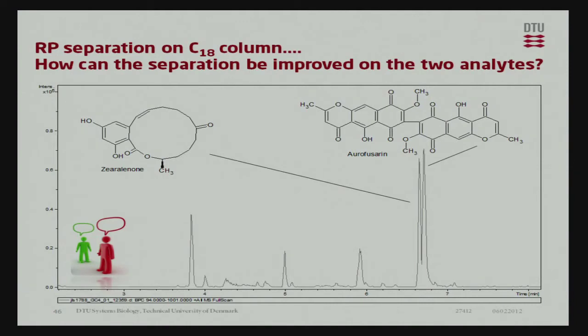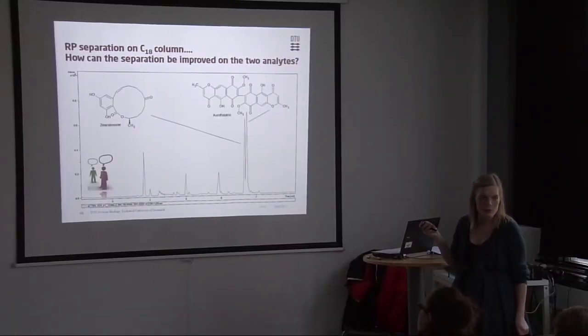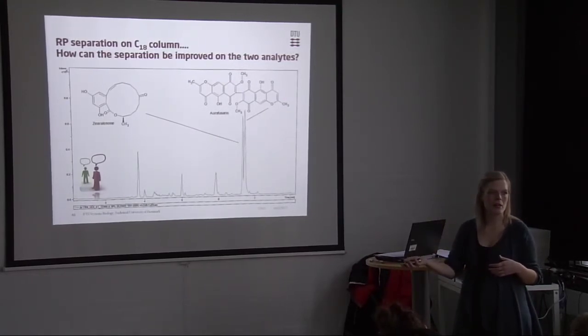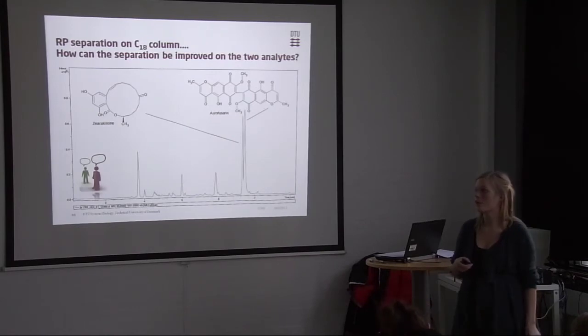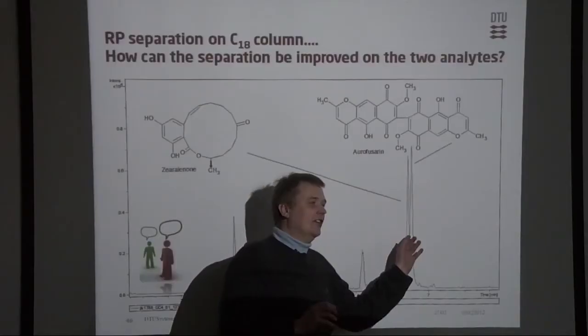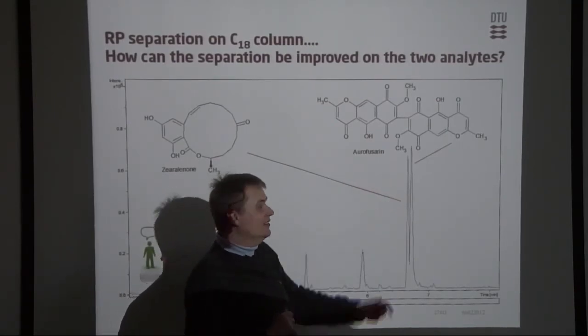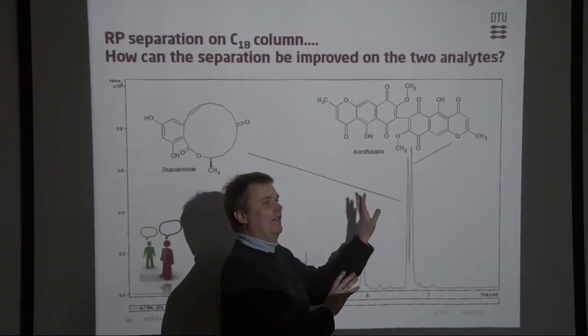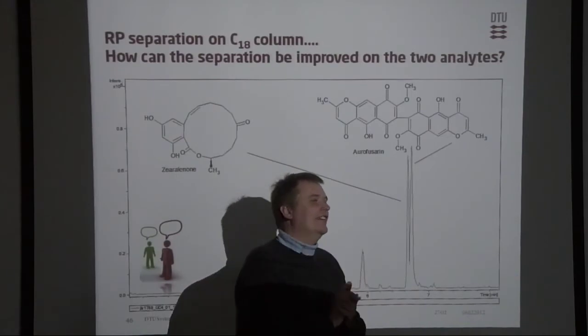Another example of two compounds that are very similar in their polarity, they come out very closely together in reverse phase. But this one got a lot of aromatic rings, so again here you can improve the retention of that one by choosing another type of reverse phase, phenyl or pentafluorophenyl. In this case we could quantify these two relative to each other, but if you have very little of the smaller one or the opposite then you cannot quantify them unless you have a very selective detector.